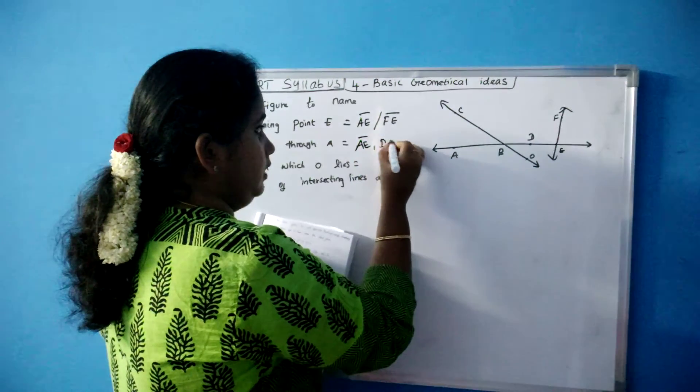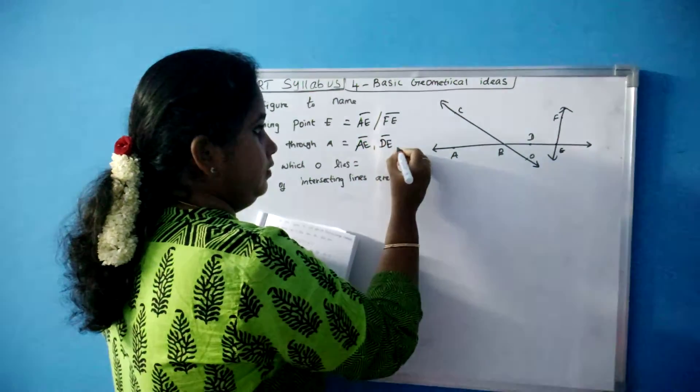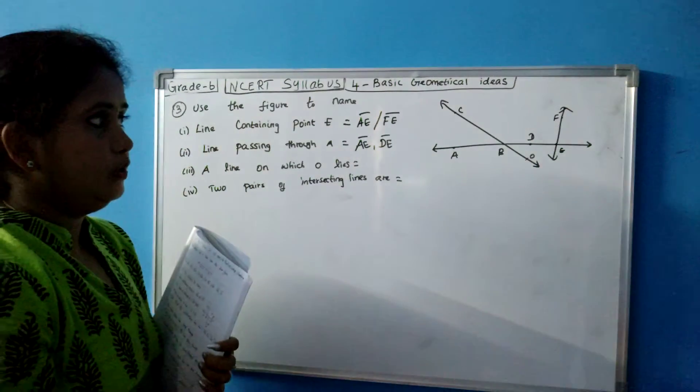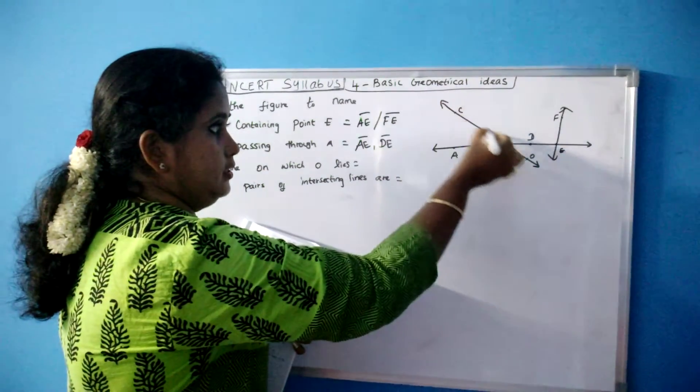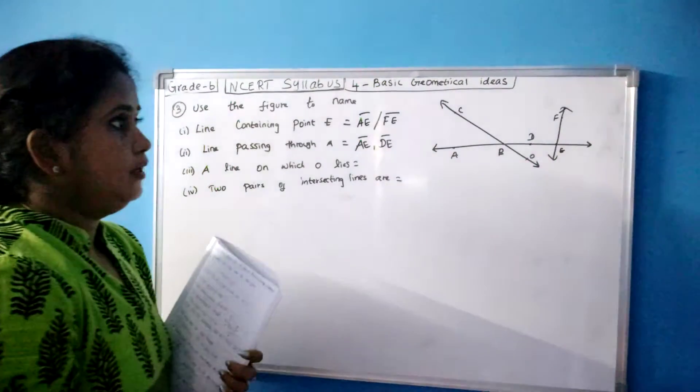Line passing through A. So which is the line passing through A? That is line passing through A is AE and then also DE. So these are the lines passing through A. D will not come because it is there in this line.